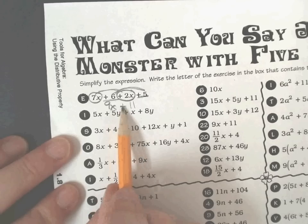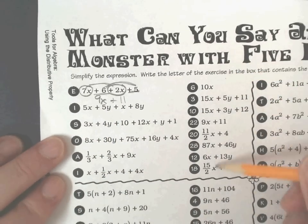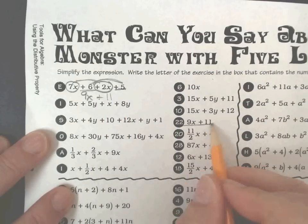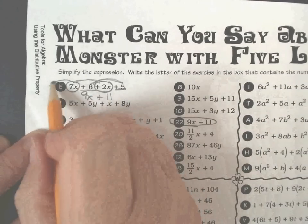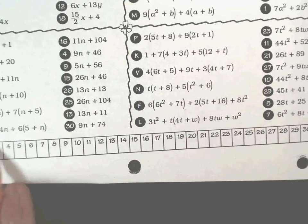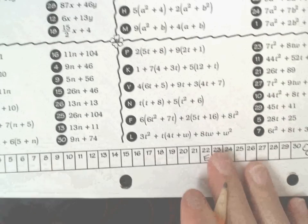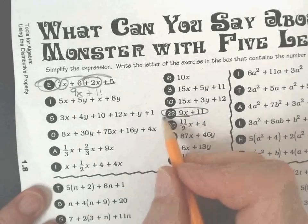So for E, I have 9x plus 11. I'm going to look over here in this column for that answer, and it's right here, 22. So 22 is going to be E. Go down to the bottom, find the number 22, and I put an E in for it. And then I'm going to cross this off as an answer choice.